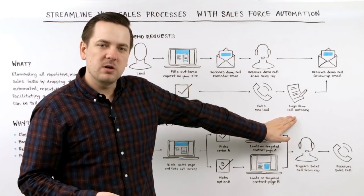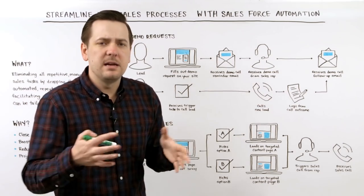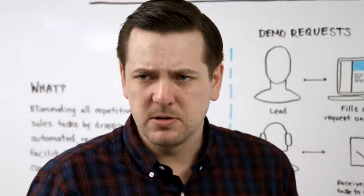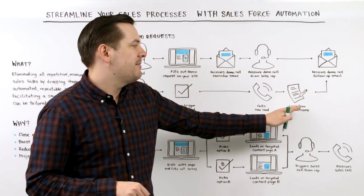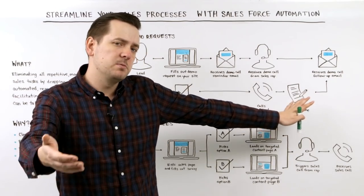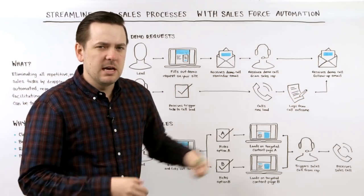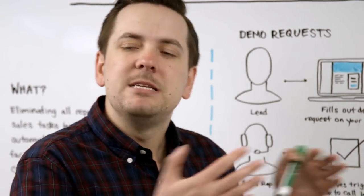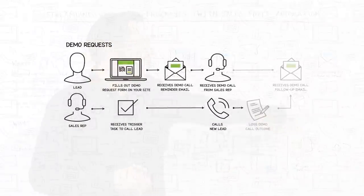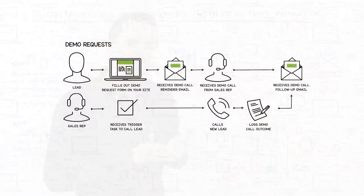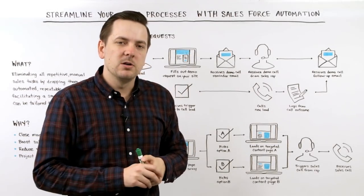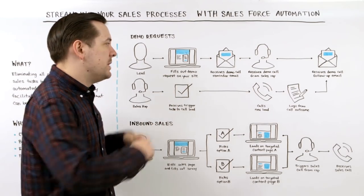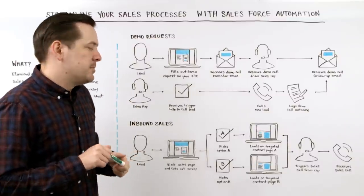You make that phone call — the demo, the free consultation, whatever — and then you choose some sort of a call outcome. This is where it can get really complicated or really simple, depending on your needs. You can have outcomes for, for example, they didn't pick up the phone — a common one — and you can have that set off an automated follow-up system: hey, you missed your demo, let's reschedule. Alternatively, you can have an outcome that says we did have that phone call and here's how it went, which can trigger an email saying thanks for talking to me today, here's what we covered. We use this in our business and it works great.